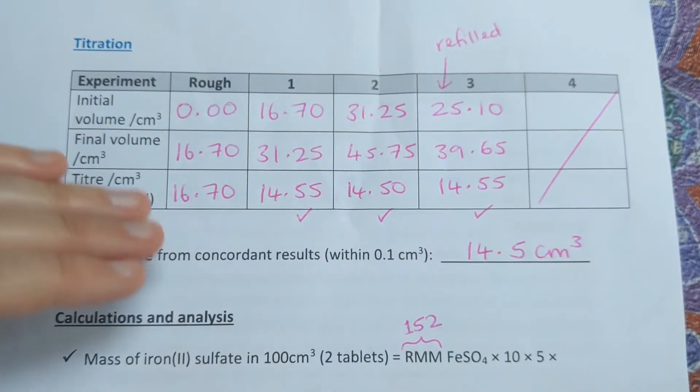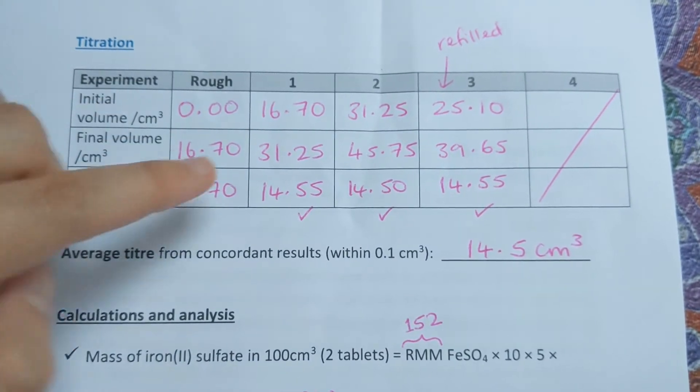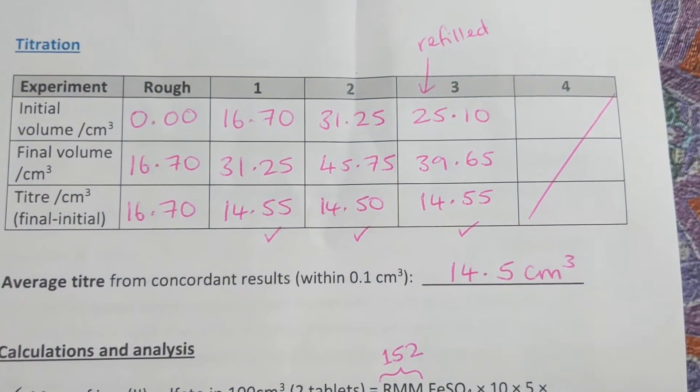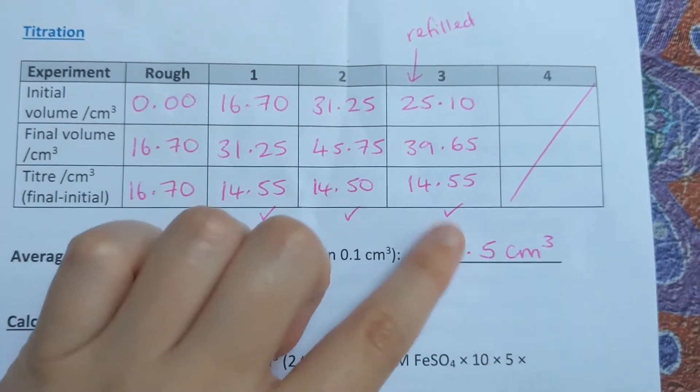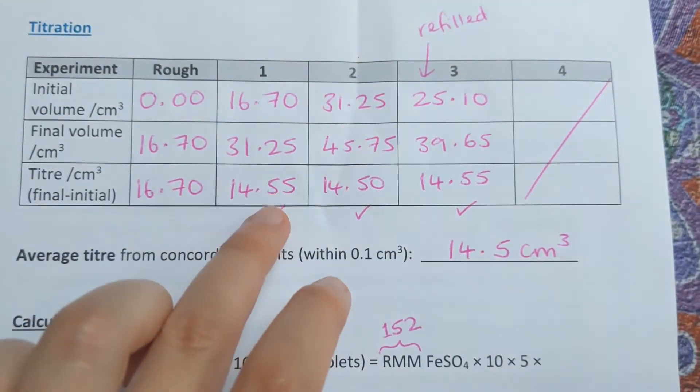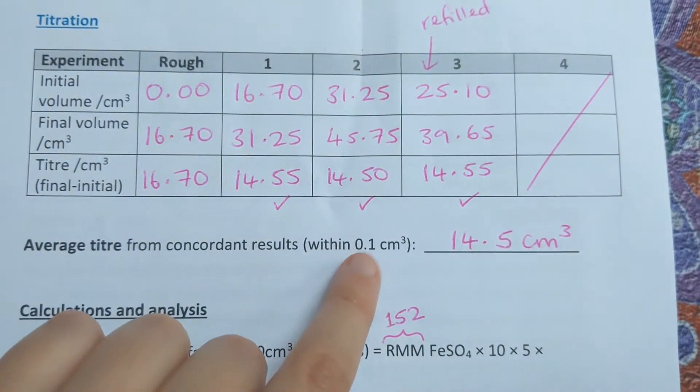Then we do these more slowly and accurately. In titrations, our aim is to get titers within 0.1 cm³ of each other.